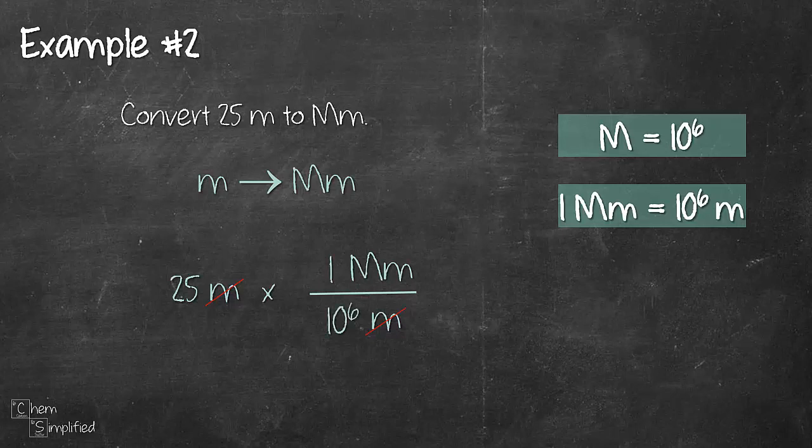So that gives us 25 times 1 divided by 10 to the power of 6. If you punch it in your calculator or if you can do mental math, that will give us 2.5 times 10 to the power of negative 5 mega meter.